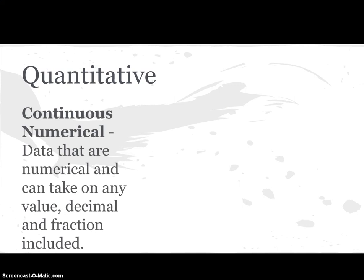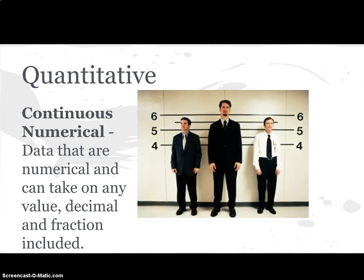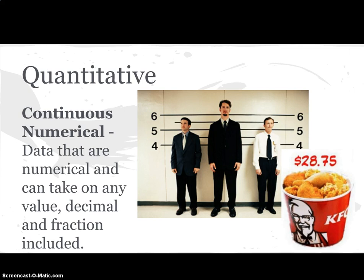We've got our other kind called continuous numerical. Continuous numerical data differs because these values can take on any value — decimal or fraction — within separate intervals. For example, the height of suspects: five foot six, five foot ten, six foot four, 6.4 feet, 5.3 feet — we can have decimal values in between. That's continuous numerical quantitative data. The price of a bucket of chicken: $28.75, $29, $13.25, $13.22 — all those values create a continuous numerical variable. And just like Homer, we love chicken.